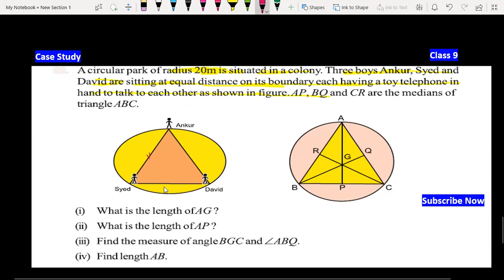These three are standing at equal distance. Then the figure is made again, which has AP, BQ and CR as medians. AP, BQ, CR are medians.